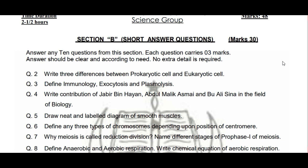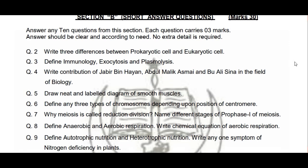3 marks ke according hi answer karna hoga. Answer bilkul clear hona chahiye aur to the point hona chahiye — jo question ki need hai usi se related ho. Extra details dene ki zarurat nahi hai. Questions bohat easy given hain. Model paper ka question number one hai: 'Write three differences between prokaryotic and eukaryotic cell.'